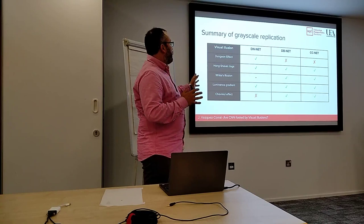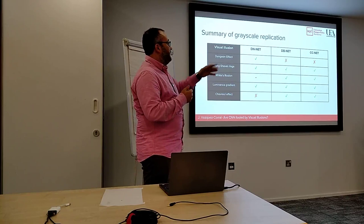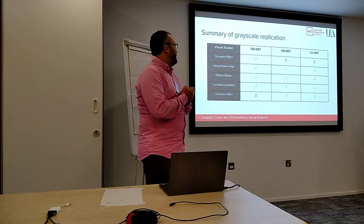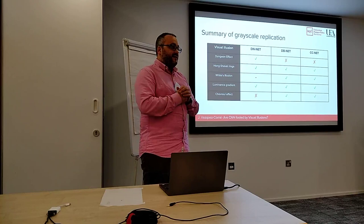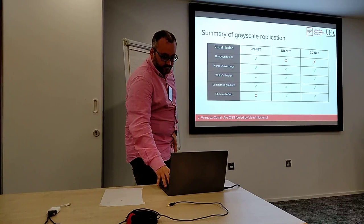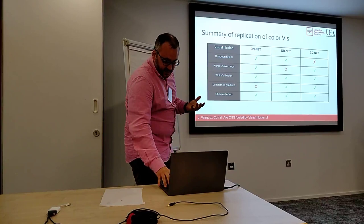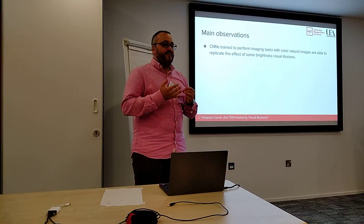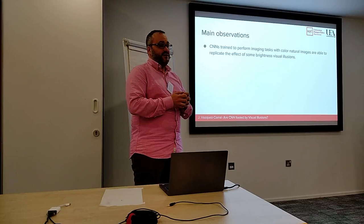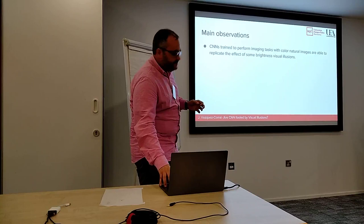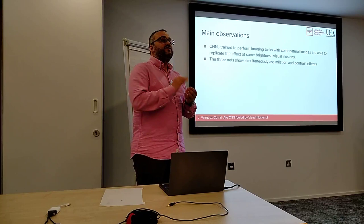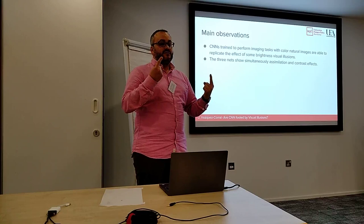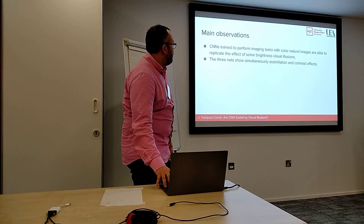Summarizing the replications in grayscale, we can replicate most of the visual illusions across each of the three datasets. The white illusion in the denoising case replicates to a very small degree, shown with just a dot, but most illusions are replicated. Moving to color, we are also able to replicate most of them. A key observation is that CNNs trained for visual tasks with color natural images can replicate these visual illusions. Very importantly, all three networks show both assimilation and contrast simultaneously — it is not just one or the other based on the task, but both appearing in the same network.